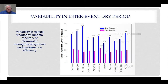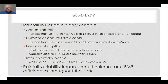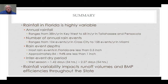In summary, rainfall in Florida is highly variable, ranging from 66 to 68 inches per year in Tallahassee and Pensacola to 38 inches per year in Key West. There is large variability in the number of annual rain events. Most rain events in Florida are less than a half an inch, and approximately 84 to 94 percent are less than one inch. Inter-event dry periods are highly variable for both wet season and dry season conditions, which can affect the efficiencies of stormwater BMPs. In general, rainfall variability is important to know because it impacts both runoff volumes and the effectiveness of BMPs within the State of Florida.